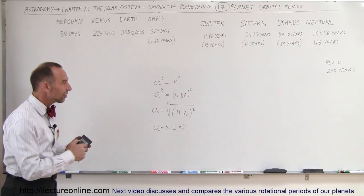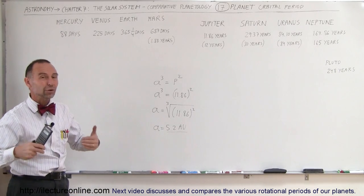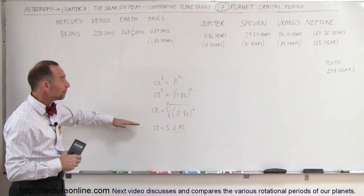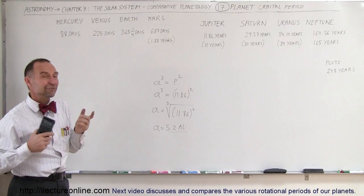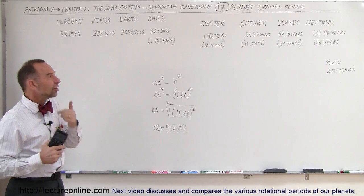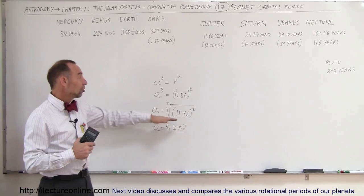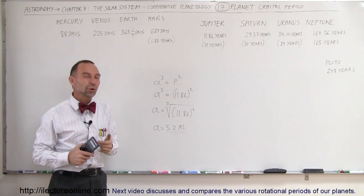So Kepler realized this relationship based upon all the information that he received from Dr. Brahe when he died, and since Kepler was working for him, he was able to use that information and find a way to calculate the distance to the planets just by knowing how long it took them to go around the sun.